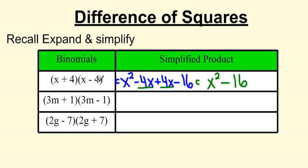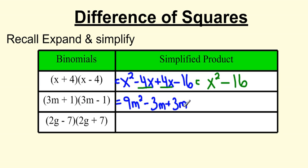So x plus 4 times x minus 4 gives us x squared minus 16. Let's look at the next one — again, we're going to see that pattern. 3m plus 1 times 3m minus 1. F stands for first, so we have 3m times 3m, which is 9m squared. O is the outside: 3m times negative 1 gives us negative 3m. I stands for inside: 1 times 3m. And L stands for last: 1 times negative 1. Simplifying by collecting the middle terms — negative 3m plus 3m cancel out — and I'm left with 9m squared minus 1.